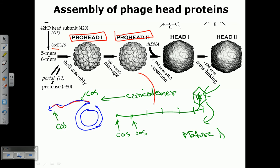From pro head 2, the head comes into contact with the concatemer, and packaging along with maturation of the head occur simultaneously. Packaging is carried out by terminase enzymes, and as the pro head matures, the dsDNA is inserted inside the head. It is very important that before full maturation of the phage head, the genome segment must be inserted inside the head.